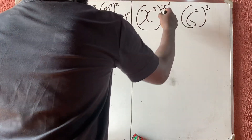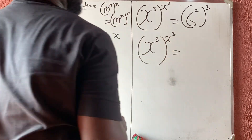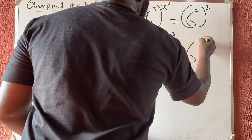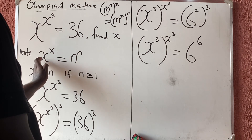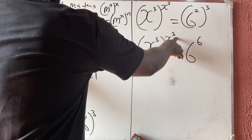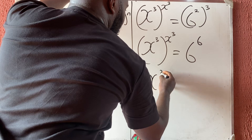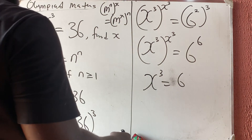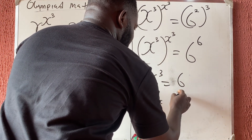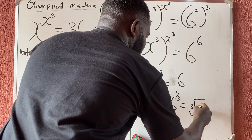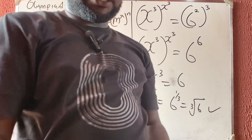So we now have x raised to power 3, all raised to power x raised to power 3, equal to 6 raised to power 6. These two expressions match the pattern — x raised to power 3 corresponds to 6. Therefore x raised to power 3 equals 6, which gives us x equals 6 raised to power 1 over 3, the cube root of 6. Very simple to solve — thank you for watching, please like, share, and subscribe.